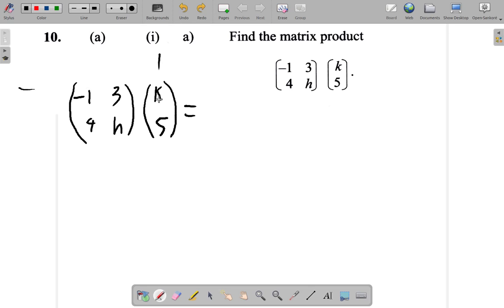Row 1 times column 1 will give the answer in row 1, column 1. Row 1 by column 1 will give that answer in row 1, column 1.